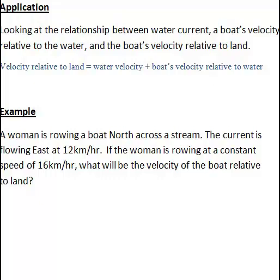The velocity relative to land, we'll call that vector C, can be worked out by determining the water velocity A, that is the velocity of the current, plus the boat's velocity relative to water B, which relates to the person rowing the boat.